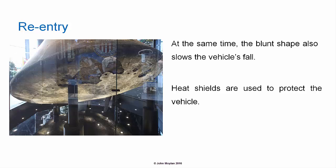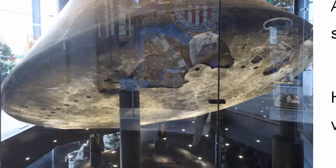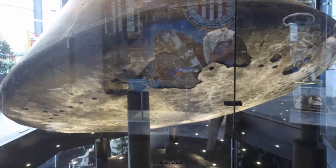Heat shields are used to protect the vehicle. A heat shield after re-entry into earth's atmosphere is heavily scorched and pitted, but the space capsule quite obviously survives, showing that the heat shield did its job. Heat shields used for most spacecraft are called ablative heat shields because they work by burning away during re-entry, so that the heat is taken away by the burning of the shield rather than being transferred to the occupants of the capsule.